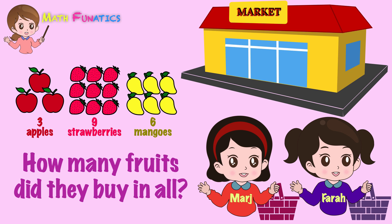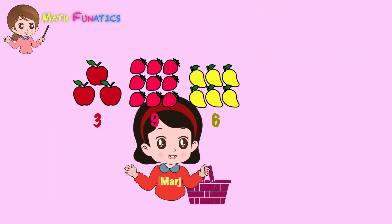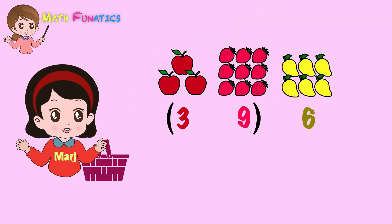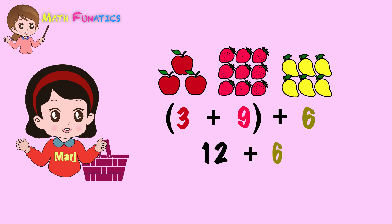Marge decided to add the fruits by grouping the apples and strawberries first. She did 3 plus 9 first and got 12. Then she added 6 mangoes to 12 and got 18 fruits in all.